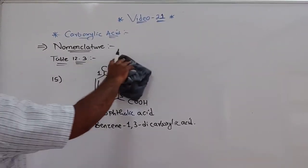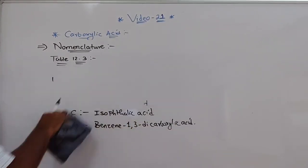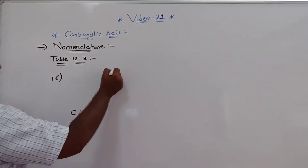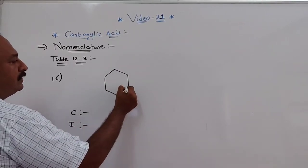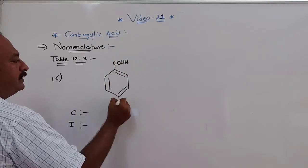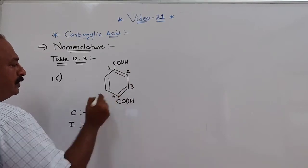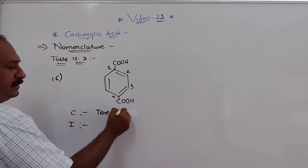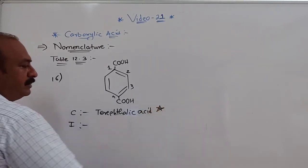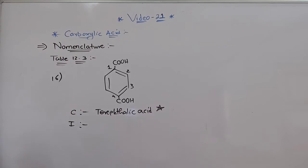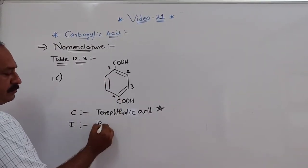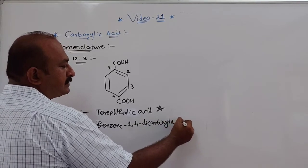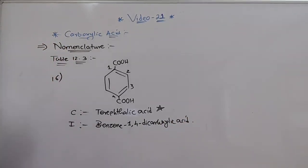The 16th and last example has a benzene ring with COOH groups at positions 1 and 4. The common name is terephthalic acid — this is asked many times in MCQs. The IUPAC name is benzene-1,4-dicarboxylic acid. So this completes table 12.3.